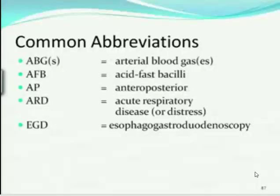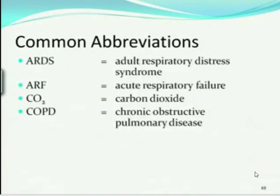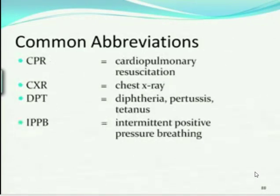Let's look at some abbreviations. ABGs — arterial blood gases, know that abbreviation. EGD — esophagogastroduodenoscopy, learn that one. AP — anteroposterior, know that. CO2 — carbon dioxide. COPD — you must know that one. CPR. CXR — chest x-ray. DPT — diphtheria, pertussis, tetanus, one of your vaccinations. IPPB — intermittent positive pressure breathing. Know all four of those.